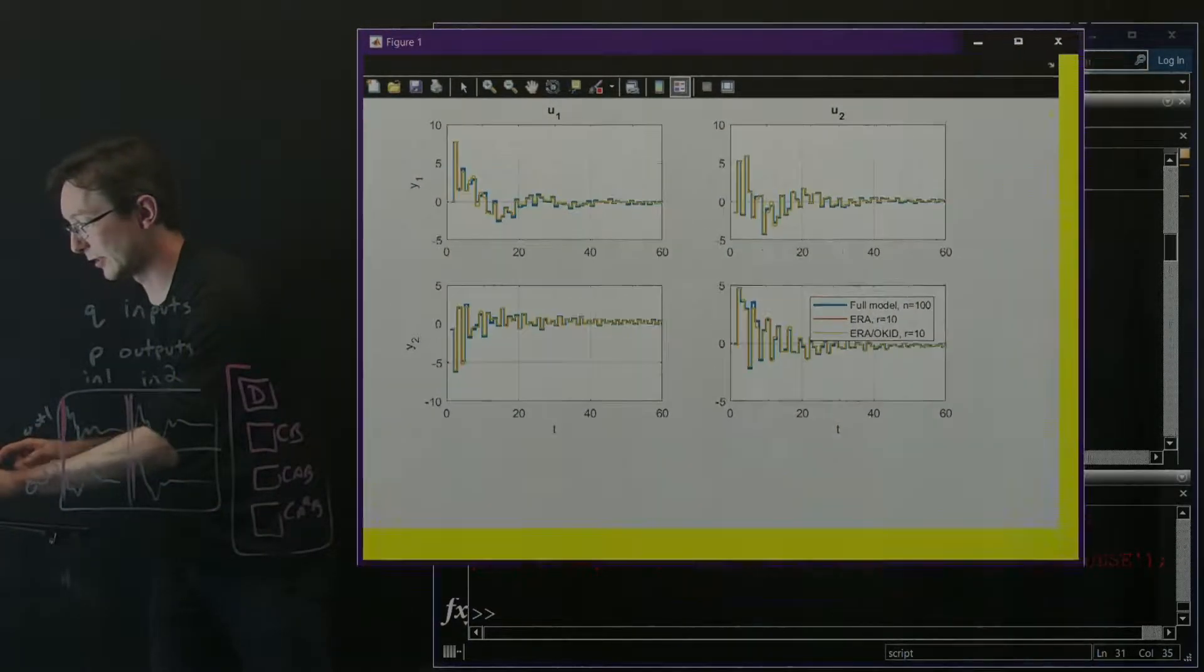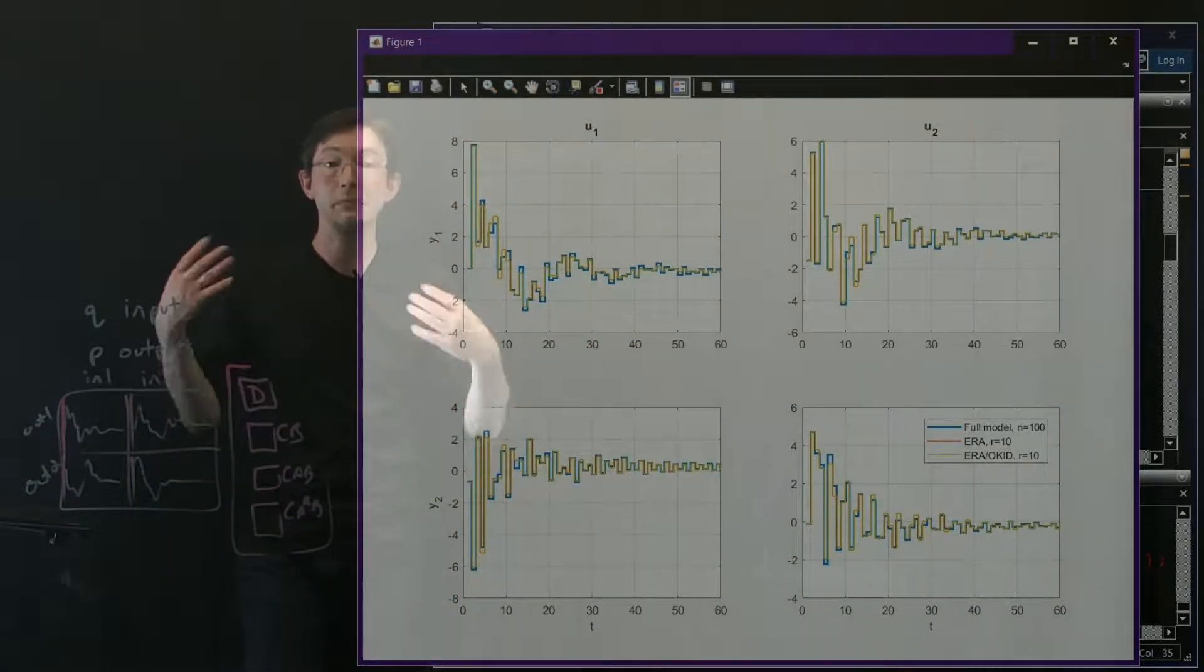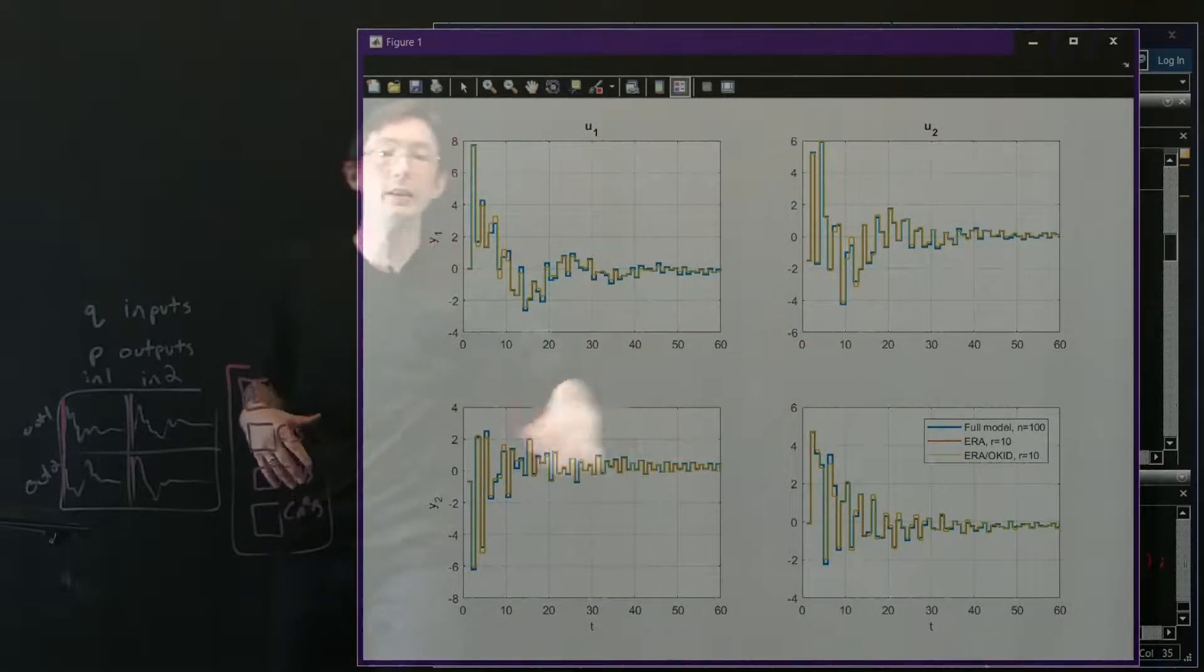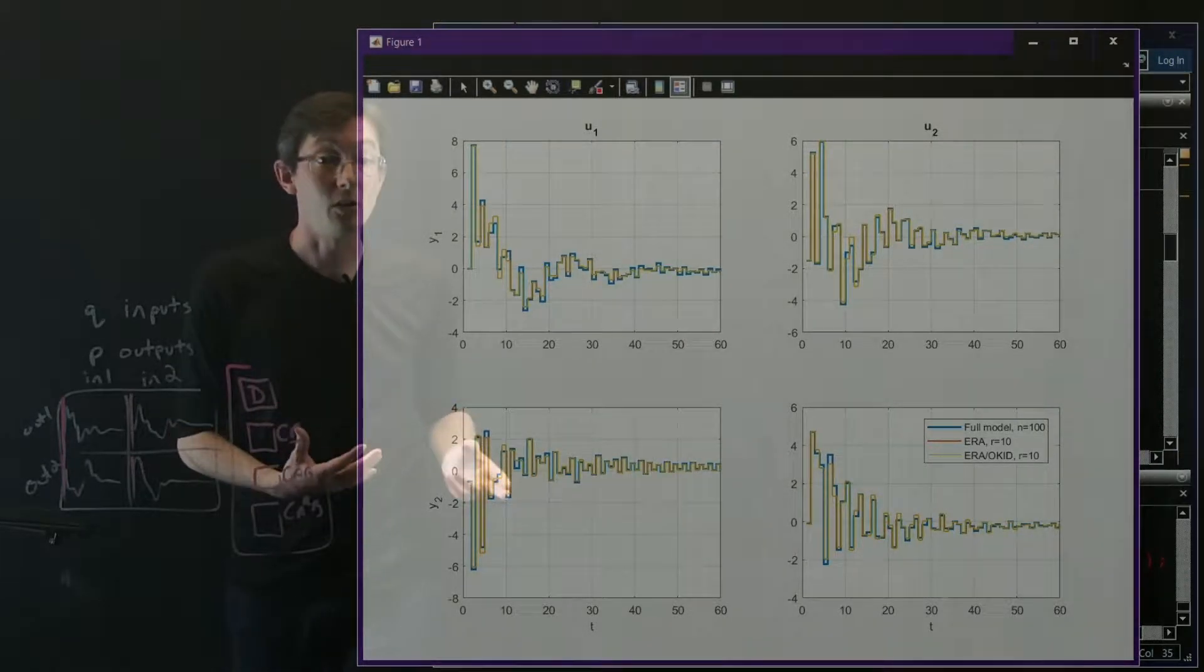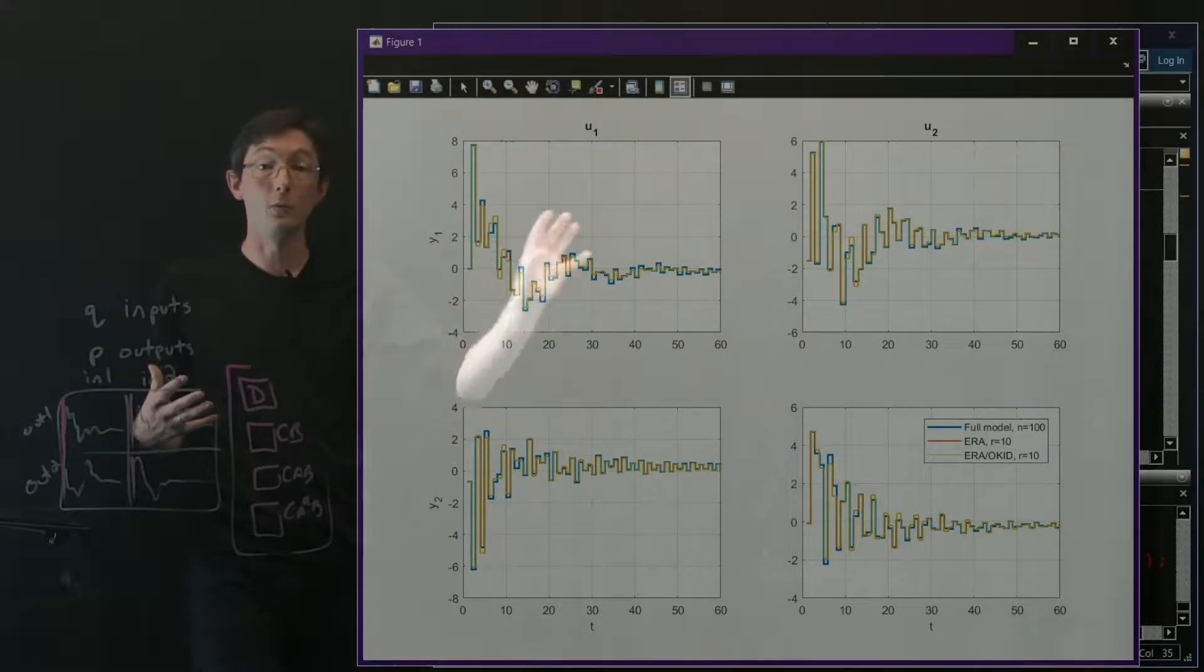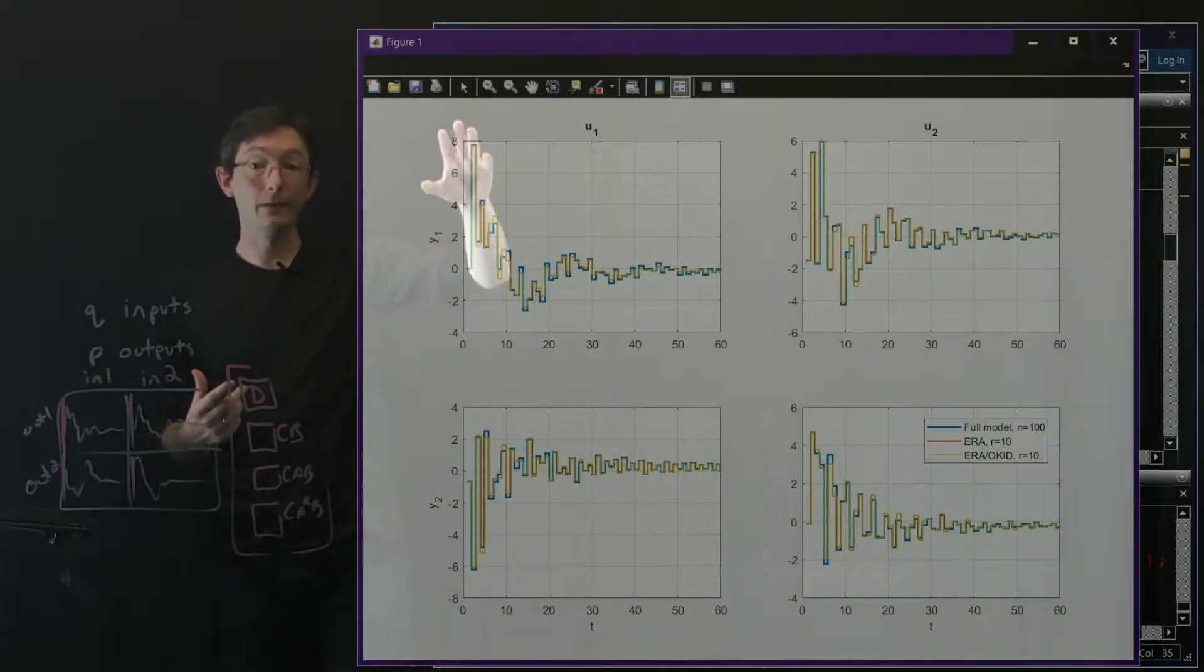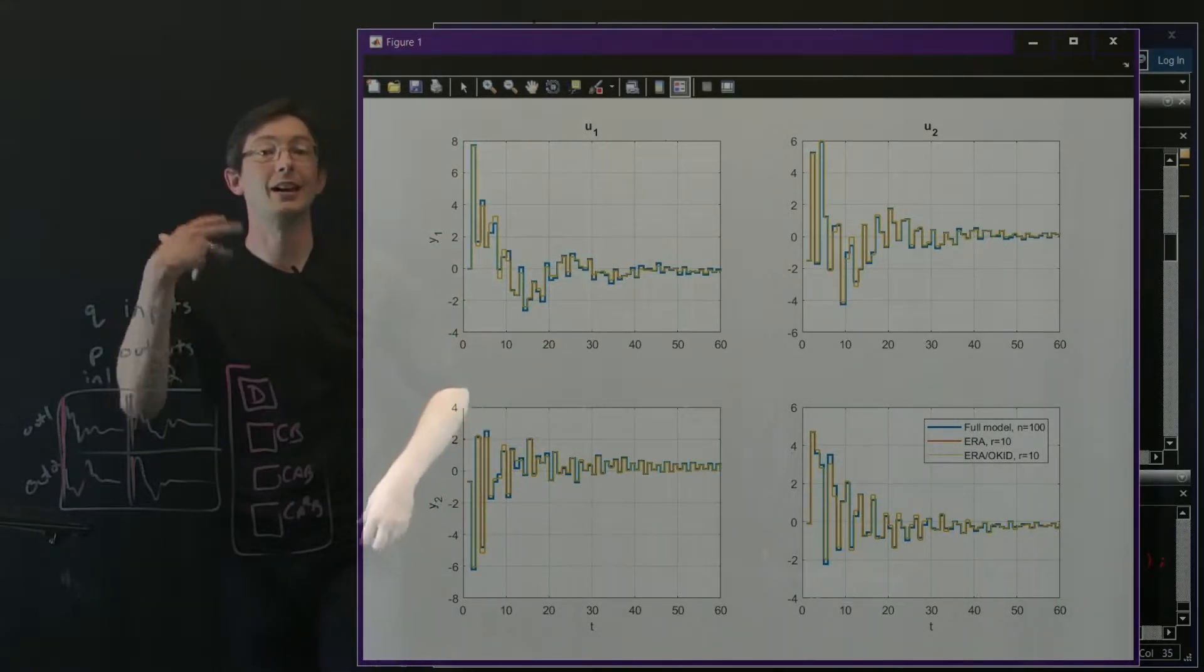We're ready to plot everything. This is where it gets kind of cool. This is the same system we looked at with balanced truncation and balanced POD. These are the same impulse responses, same model order r=10. The original system had 100 states. What you can see is that the full model in blue is very well approximated with a 10-mode ERA model, and it's also pretty well approximated with this ERA-OKID model. All of these cases work really well. It's really interesting - I didn't have access to that model, all I had was data, and I can fit a low order state space model